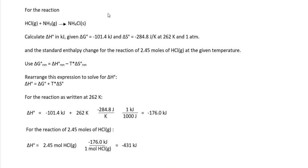Here we are asked to calculate delta H for this reaction. We are given delta G as negative 101.4 kilojoules, delta S as negative 284.8 joules at a temperature of 262 Kelvin and one atmosphere. Now we already know delta G, and it's negative, so we can conclude that the reaction is spontaneous or product favored.